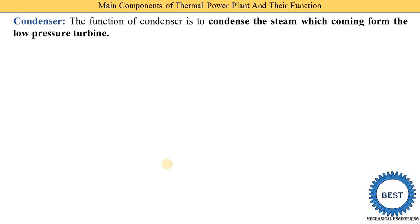In the condenser, the condensation process takes place. The condenser is a type of heat exchanger where we perform the condensation process — meaning steam is converted into water, i.e., vapor is converted into liquid state. That is why this heat exchanger is called the condenser.